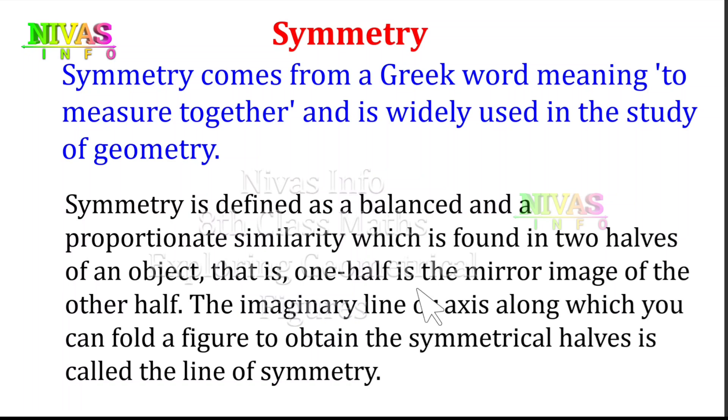Symmetry is defined as a balanced and proportionate similarity which is found in two halves of an object. That is, one half is the mirror image of the other half. The imaginary line or axis along which you can fold a figure to obtain the symmetrical halves is called the line of symmetry.